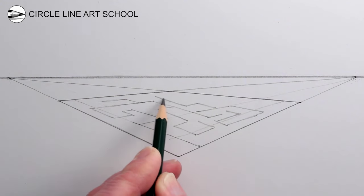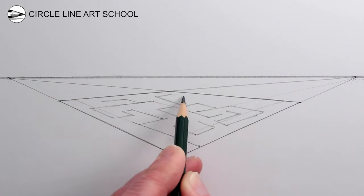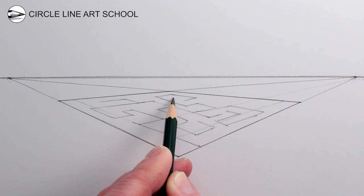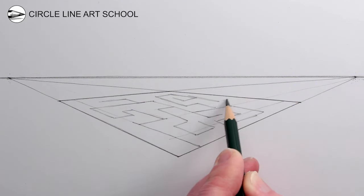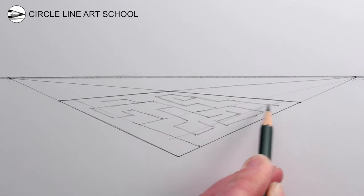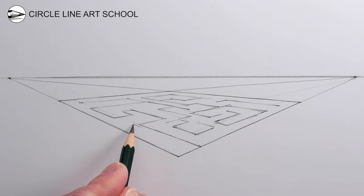So before we add any depth to the maze to make it look 3D, we could give the outline of the maze a double thickness. Just draw another line next to the lines of the maze to give it a thickness.